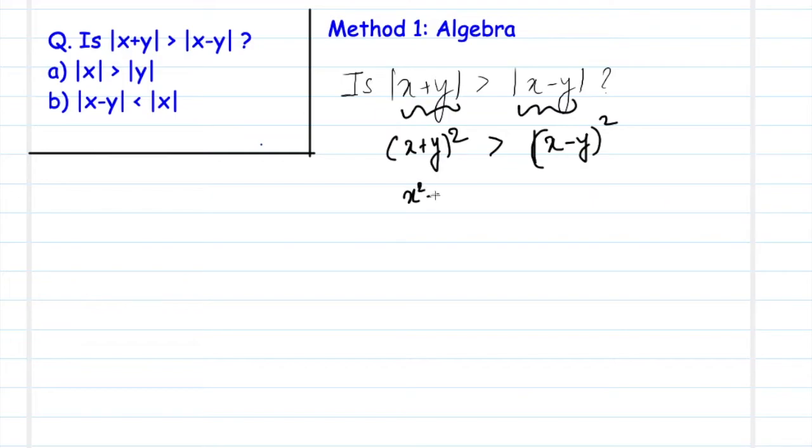So now if we simplify we can easily cancel these out and we get 4xy greater than 0 which means xy is greater than 0. So the question is really asking us is xy greater than 0. This is what we have to figure out to answer this question.